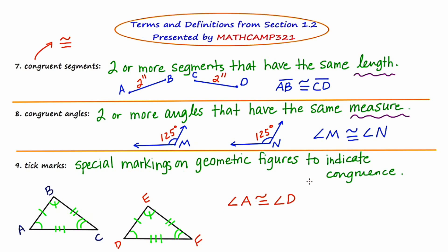There are two other pairs of congruent angles. Angle B would be congruent to angle E because they have the same tick mark — a little arc with a slash through it. I could also say that angle C is congruent to angle F; they have double arcs indicating their tick marks.